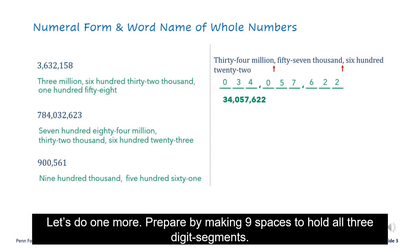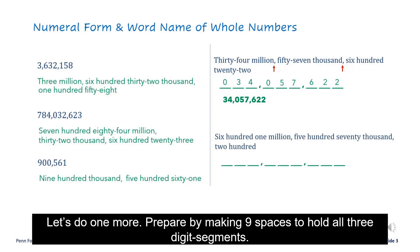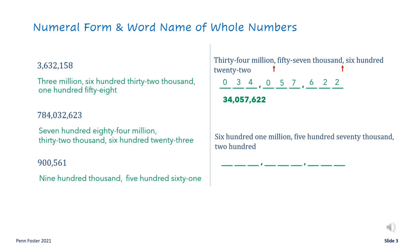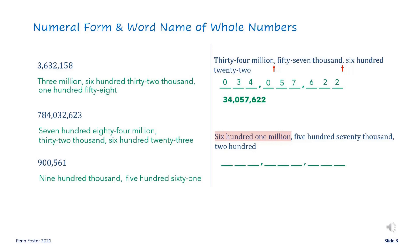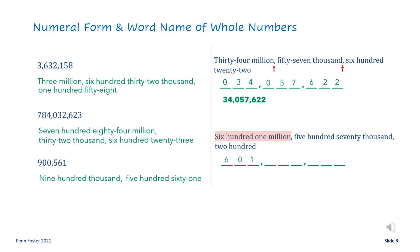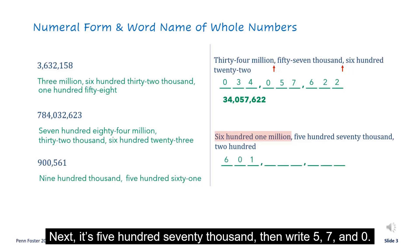Let's do one more. Prepare by making nine spaces to hold all three digit segments. Start at the left space — it says six hundred one million. Write 6, 0, and 1.